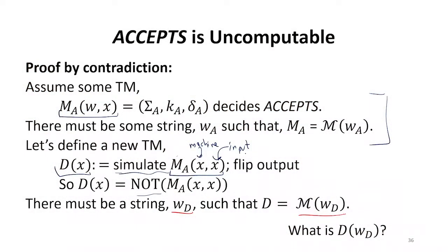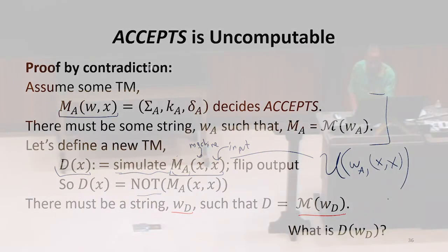We've just got to make the input. We're going to make the input to U the description of the machine A and X, X as the two inputs. So we know how to do that simulation. We certainly know how to flip the output. So all of this we should be happy with.